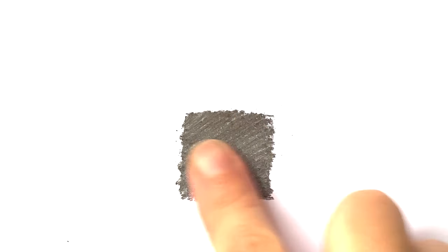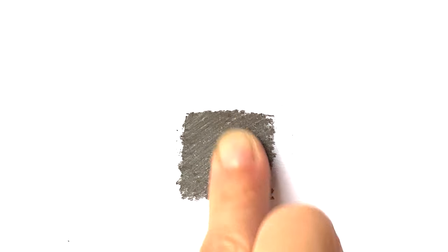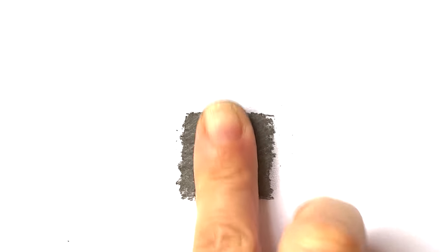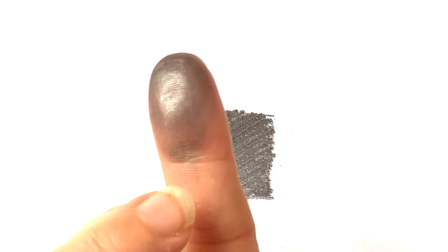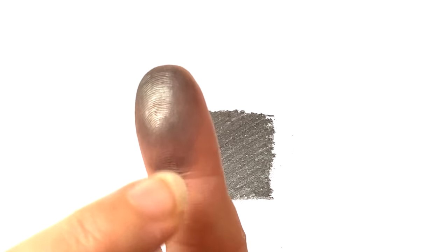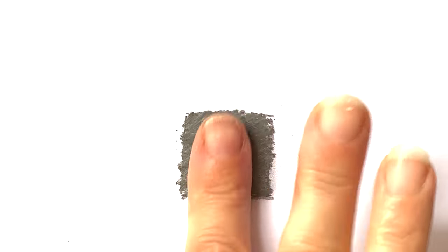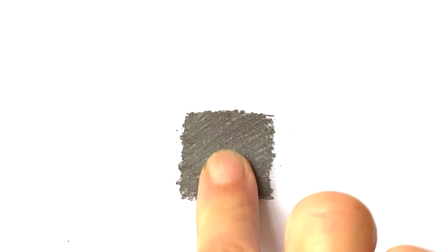Now make sure you rub this part down here. Sometimes you might miss that, so just angle your finger down so that you get that part right up to the fingertip, around to either side.